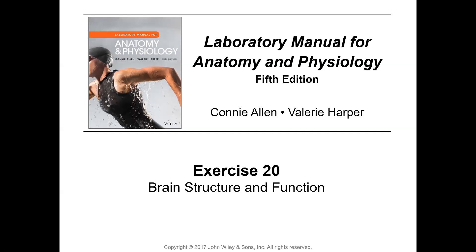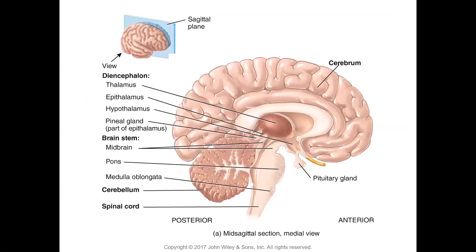The brain catalogs all the information we have perceived through sensory input, integrates that with previously acquired information, records all of this, and produces actions based on the result of this information synthesis. The brain is very well protected within the skull, the cranial cavity. During development as a fetus, the brain and the skull grow simultaneously, so the skull is essentially a mirror image of the brain.